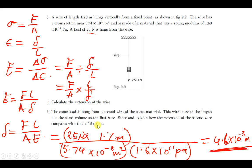Let's move on to the next question. The same load is hung from a second wire of the same material. This wire is twice the length but has the same volume as the first one. State and explain how the extension of the second wire compares with that of the first one.